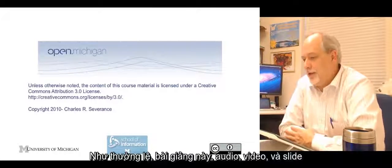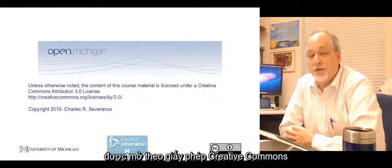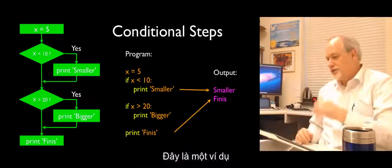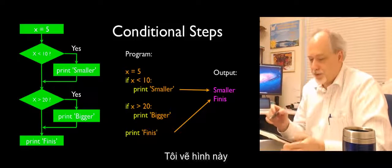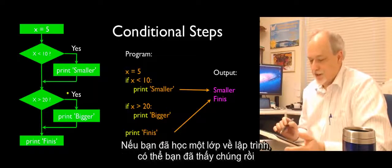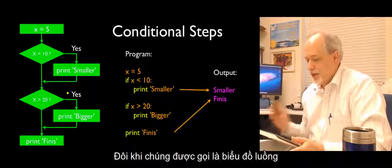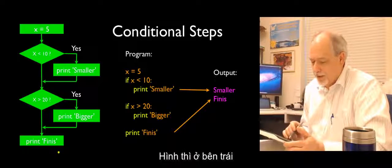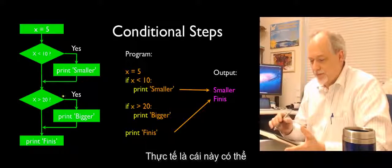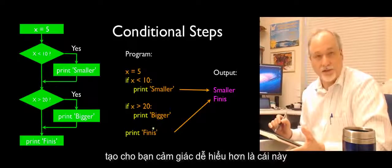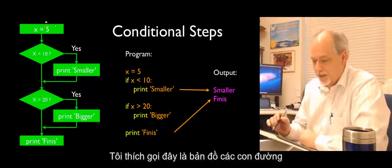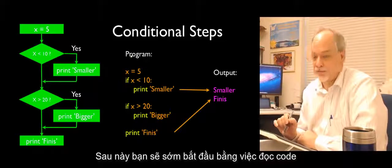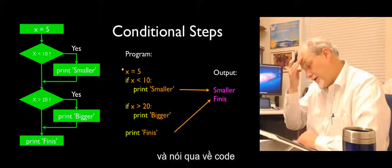This lecture in audio, video, and slides is available under copyright Creative Commons Attribution. Conditional steps are steps that may or may not be executed. I draw flowchart pictures on the left-hand side — you may have seen these if you've taken a programming class. The Python code on the right-hand side is what's important. I like to call these road maps — you trace where the code is going, and then pretty soon you just start reading the code.